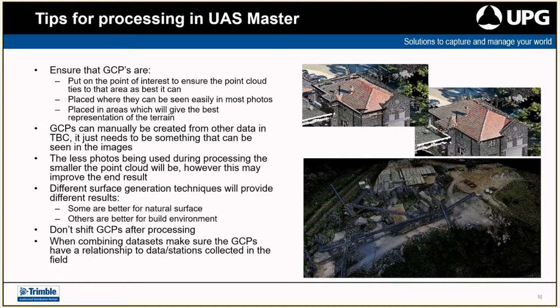Different surface generation techniques provide different results. The topography surface generation is a very basic look at the terrain, whereas SGM surface generation gives quite a detailed model against buildings. That's not to say SGM can't be used for natural surface or CBM for buildings. SGM is generally better for blacktop and roofs — you won't get so much warping where data is very similar. One of the traps for UAV processing is flying over an area very similar in all photos — any system will start to struggle returning a decent point cloud, and you'll start to see warping.